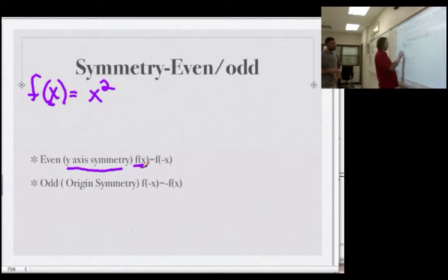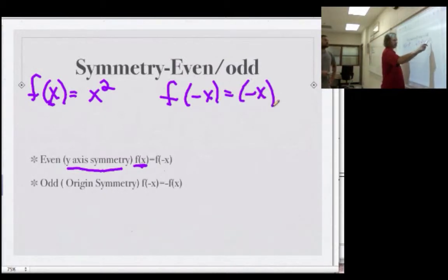So, let's check. Here's f of x. That means you replace x with a negative x. So, negative x squared. So, instead of this x, I put a negative in its place. What's negative x squared?